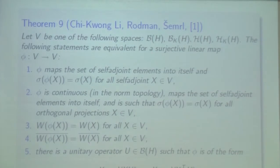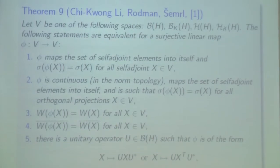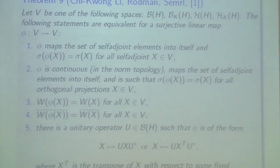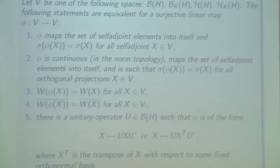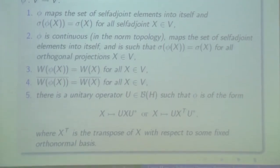The map phi: to preserve the spectra of all self-adjoint elements X from the space, flight is continuous; to preserve the spectra of orthogonal projections, meaning projections which are self-adjoint; the map phi preserves the classical numerical range; phi preserves the closure of the classical numerical range; and condition number five, that the outer operator phi must have a special form.